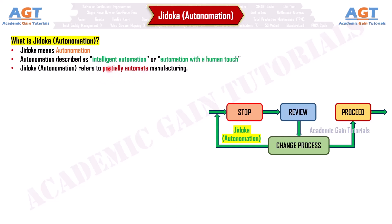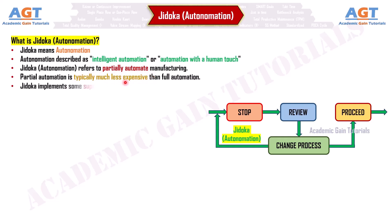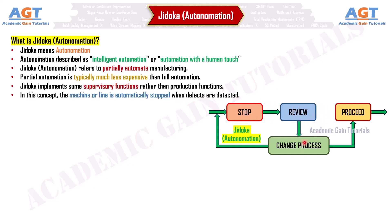Partial automation is typically much less expensive than full automation. Jidoka implements some supervisory functions rather than production functions. In this concept, the machine or line is automatically stopped when defects are detected.